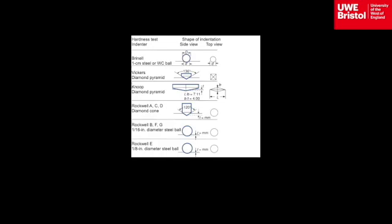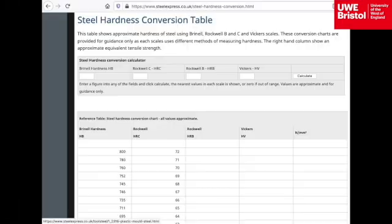The other common indenters of varying shapes are the Brinell, Knoop and Shaw. The different hardness scales are easily comparable via conversion tables, which can be found as hard copies in the materials lab or can also be found via internet search engines.